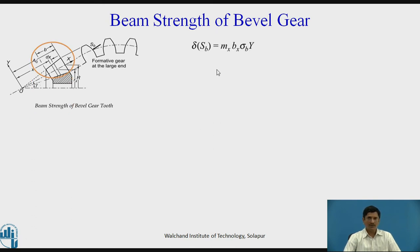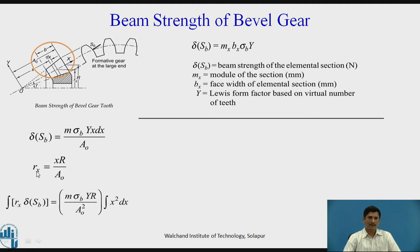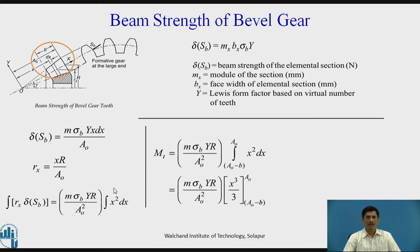Considering this zone only, delta Sb equals Mx equals A0. I can check this relation delta Sb equals M sigma B Yx dx upon A0. I need to do some adjustment, process it mathematically. If I substitute Rx equals xR upon A0, what I can get? Rx, if I multiply on the left-hand end, it is Rx into delta Sb, which is equal to Mb. If Mb x is multiplied to this x, it becomes x square R upon A0 into A0, A0 square.